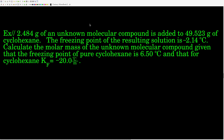The approach: we want to find molar mass, which is grams over moles. We're given the grams — 2.484 grams. The rest is finding the moles of the unknown compound. If we solve the freezing point depression equation for the molality — which is moles of solute divided by kilograms of solvent — and we know the kilograms of cyclohexane, then molality times kilograms of solvent gives us moles of solute. Dividing grams by those moles gives the molar mass.